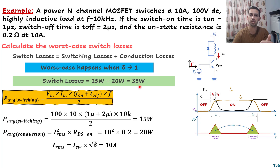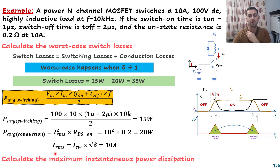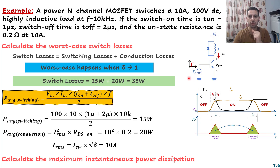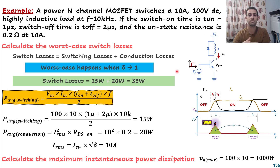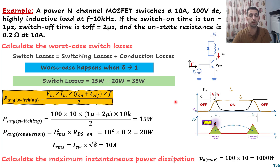This 35 watts will increase junction temperature significantly. There is also a question about maximum instantaneous power dissipation. The maximum occurs when peak voltage and peak current occur simultaneously. For the inductive case, peak instantaneous power equals V_max × I_max = 100 × 10 = 1000 watts, which is 1 kilowatt. This spike could damage the MOSFET if not properly accounted for in the design.